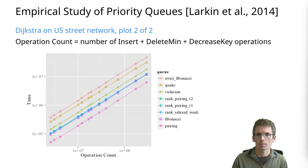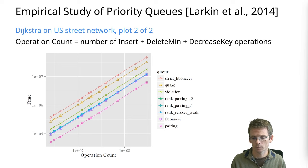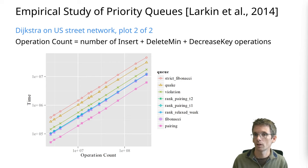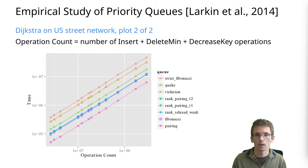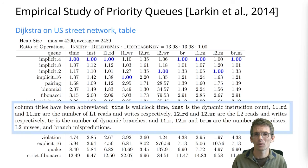Looking at the more complex heap data structures, the pairing heap performs best, but Fibonacci is already next. So Fibonacci heaps are not just a strange theoretical data structure used only in the analysis of Dijkstra's algorithm — they are a reasonably efficient implementation of a priority queue.